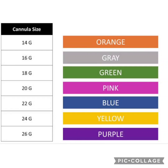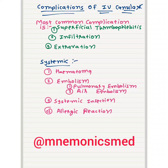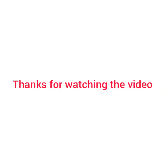Now we will remember some complications of cannula. The most common complication is superficial thrombophlebitis. It can also lead to infiltration and extravasation. There are systemic complications as well — it can lead to hematoma, pulmonary embolism, air embolism, systemic infection, and allergic reaction. This is a picture of superficial thrombophlebitis. Thanks for watching the video.